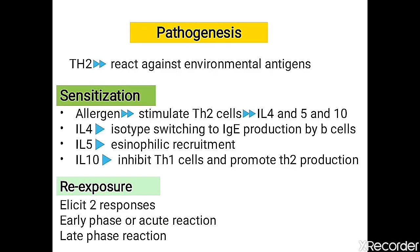For pathogenesis, the key player is the T helper 2 cell. In atopic asthma, which is hereditary and seen in childhood, at first exposure to extrinsic allergens, the immune cells become sensitized. Sensitization means that allergens are processed by dendritic cells, which present them to T helper 2 cells via T cell receptors, overactivating the immune response for future exposures.